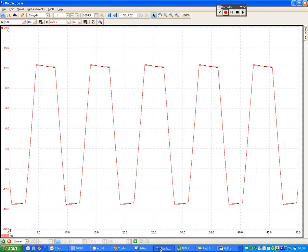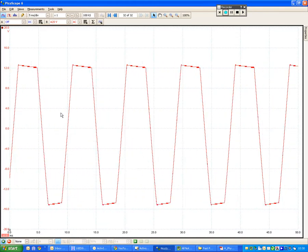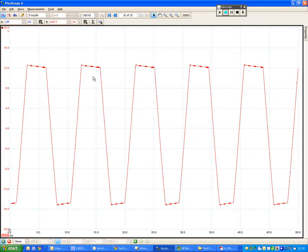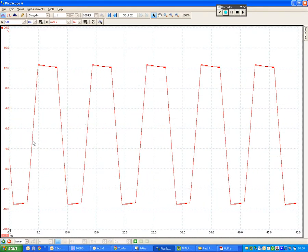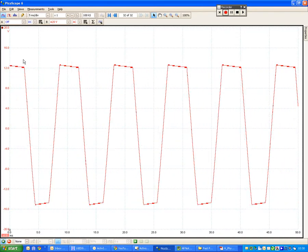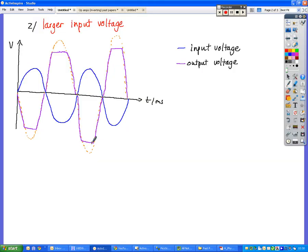So as we change that, we can still see the rough shape of the sine wave, but it's leveling out at the positive and negative values. It's leveling out at around about 12 or 13, which is about 85% of what the supply is. So that's how we end up with this shape here.